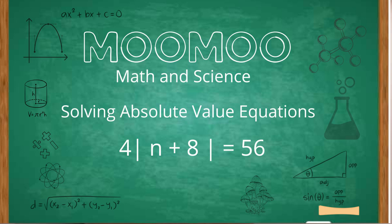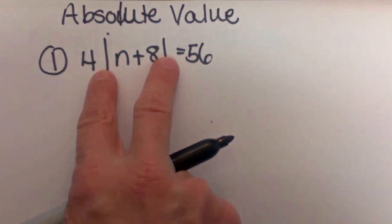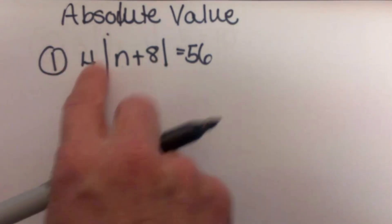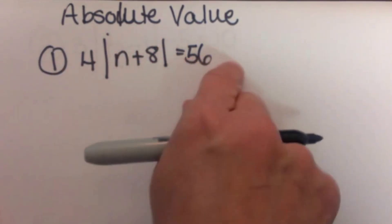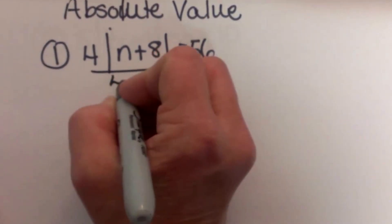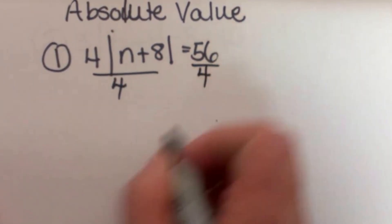To start off solving absolute value, we have to isolate the absolute value bars. So we have 4 times all this stuff is equal to 56. The first thing I have to do is divide both sides by 4 to isolate the absolute value.